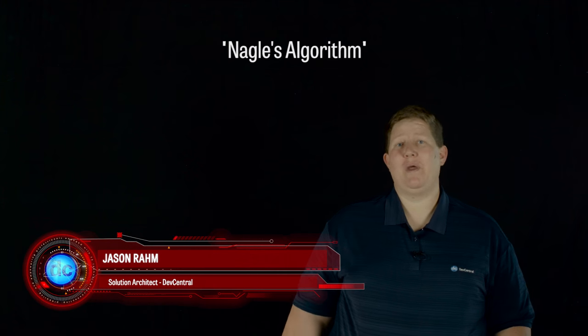Nagle's algorithm, if we go into the Wayback Machine to the Orwellian 1984, is when RFC 896 for Nagle's algorithm came out. And the reason Nagle's algorithm exists is because they wanted to be able to fill, make sure that they were filling the bandwidth of, or I mean filling a whole packet so that we weren't having this inefficiency.